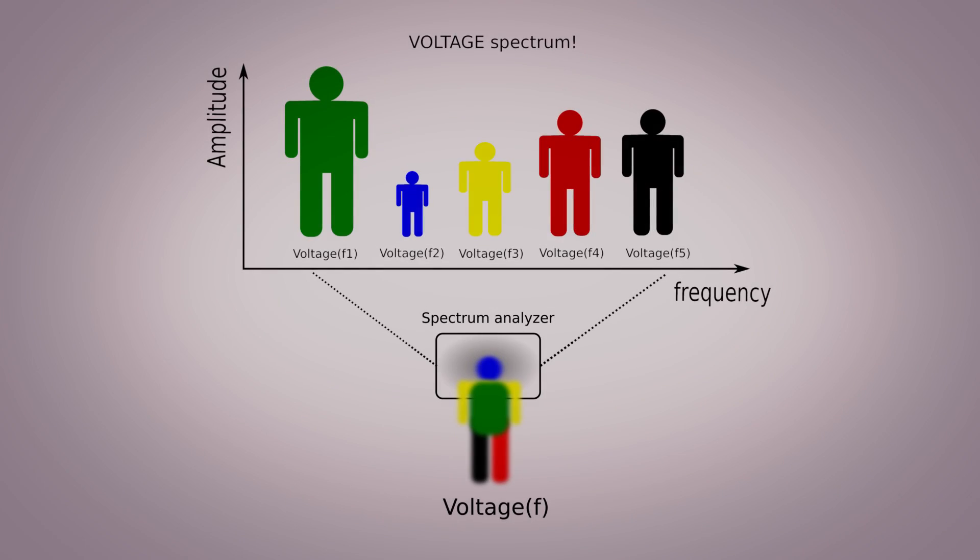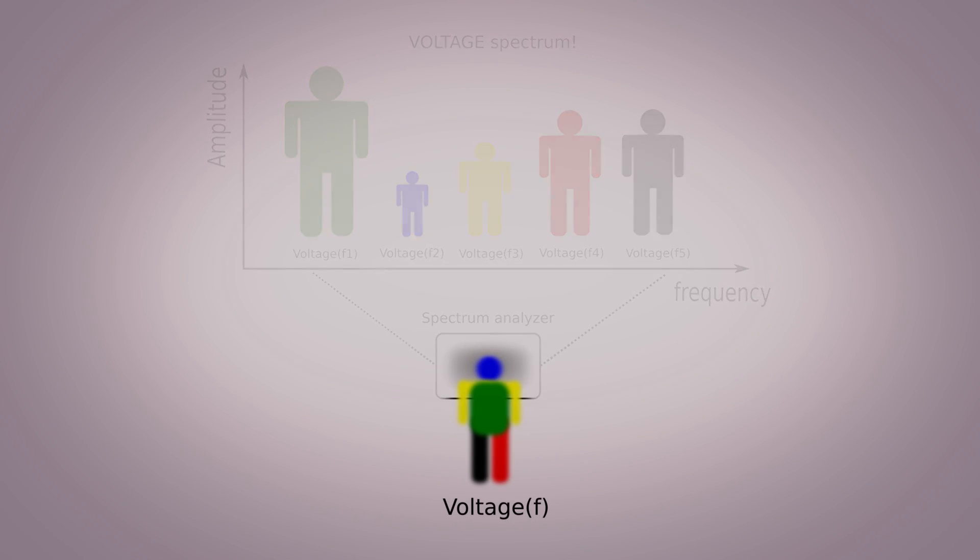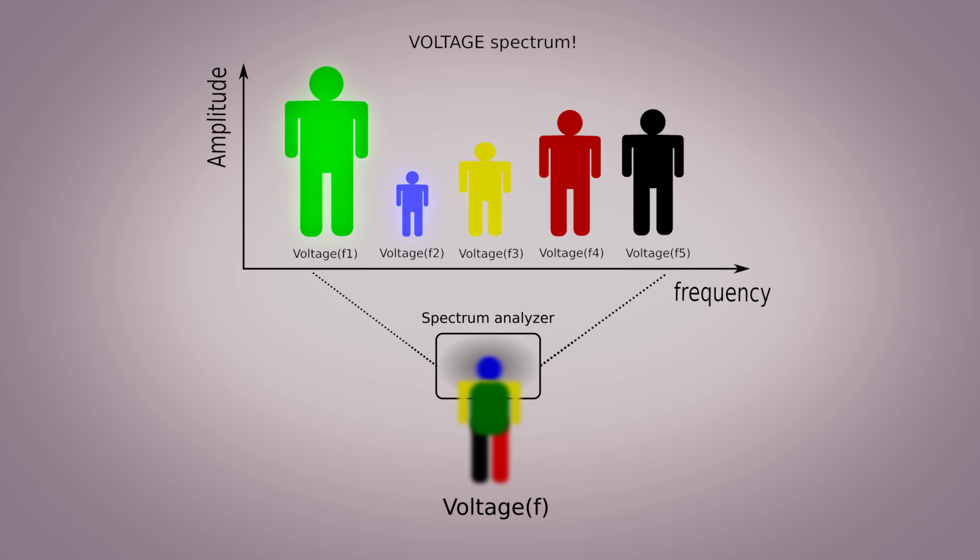When a physical quantity, for example voltage, is occupying a certain range of values determined by one of the properties of the physical quantity itself, for example frequency, that range of values is called a spectrum.